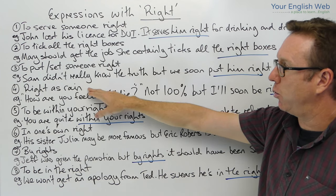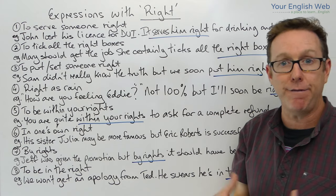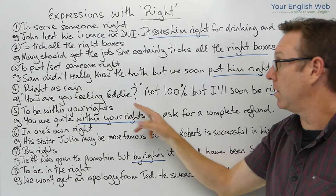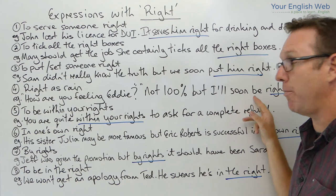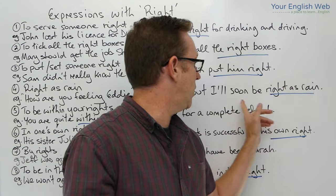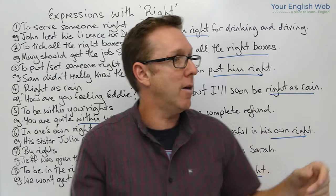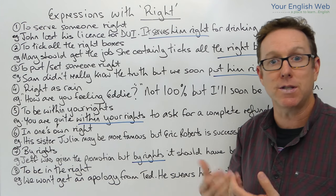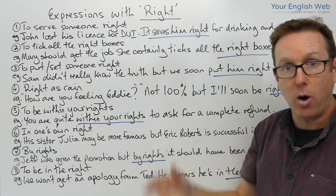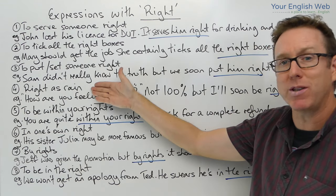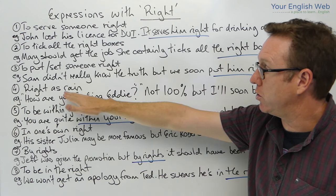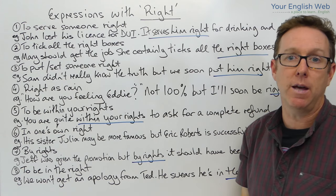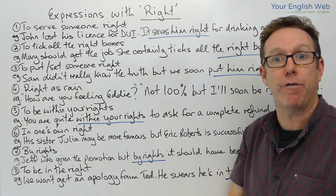The next expression is 'right as rain', which is informal. Example: 'How are you feeling Eddie?' — 'Not a hundred percent, but I'll soon be right as rain.' This means that Eddie isn't feeling completely well at the moment — he's still a little sick — but soon he'll be right as rain, meaning feeling a hundred percent or feeling better.